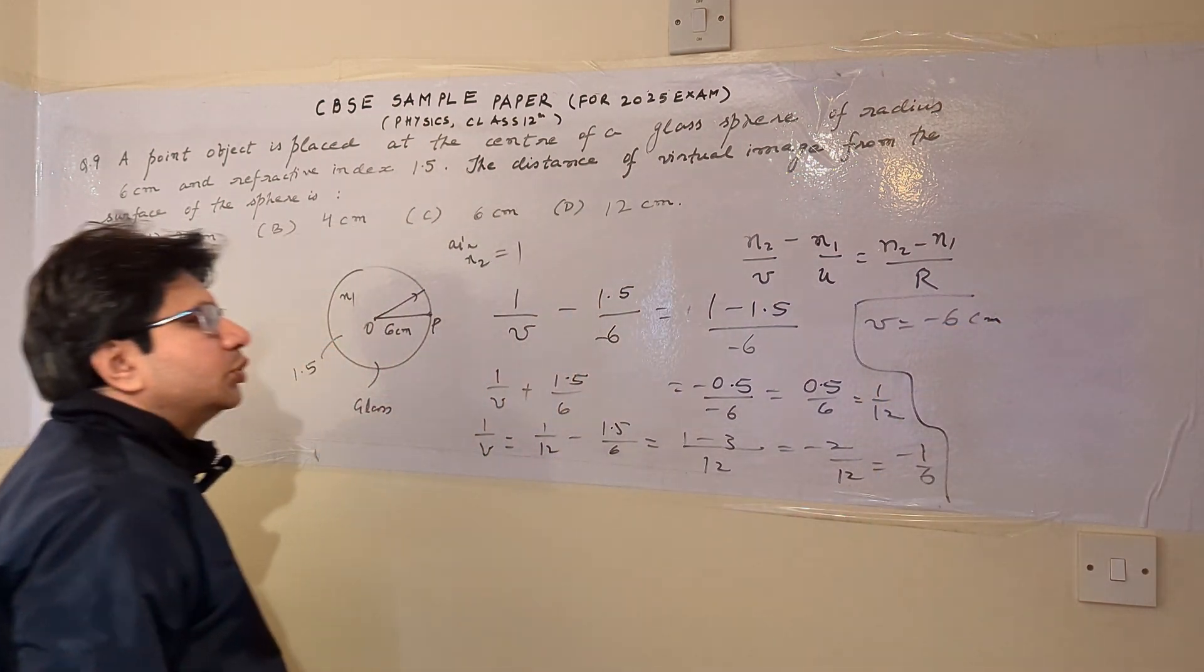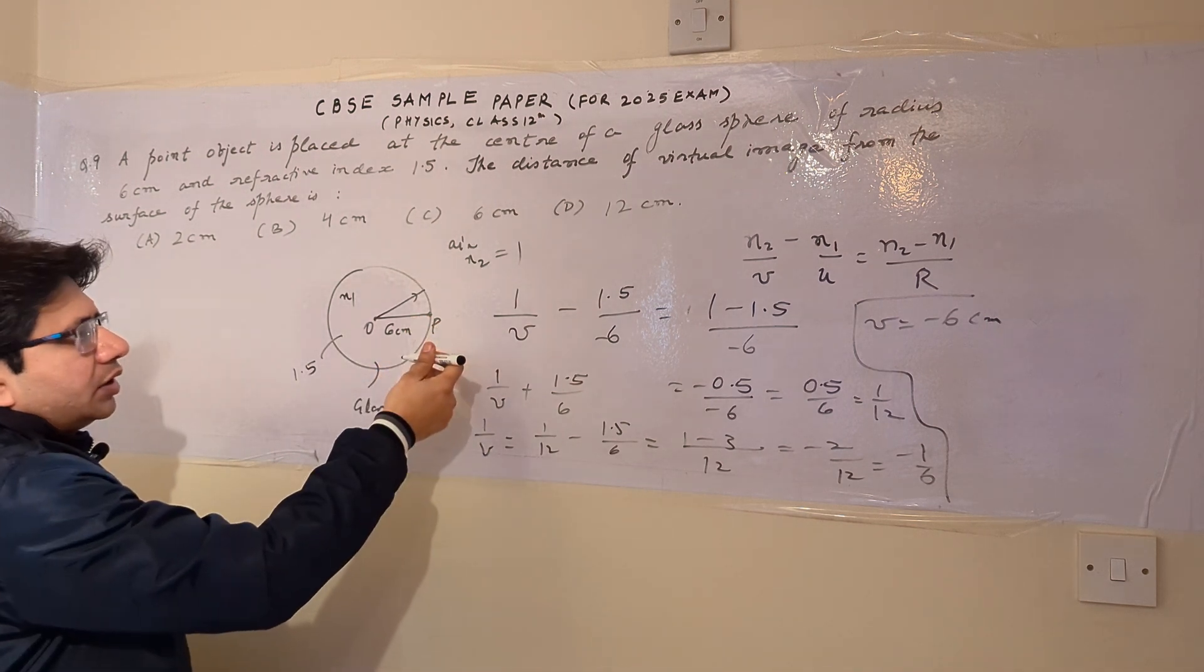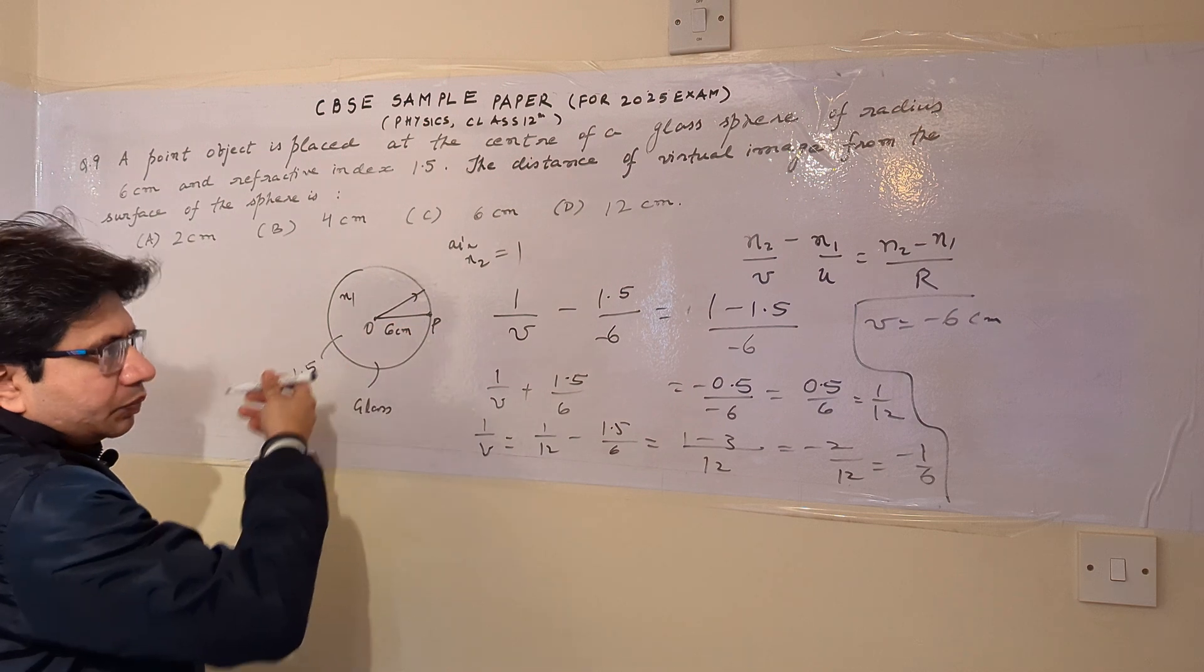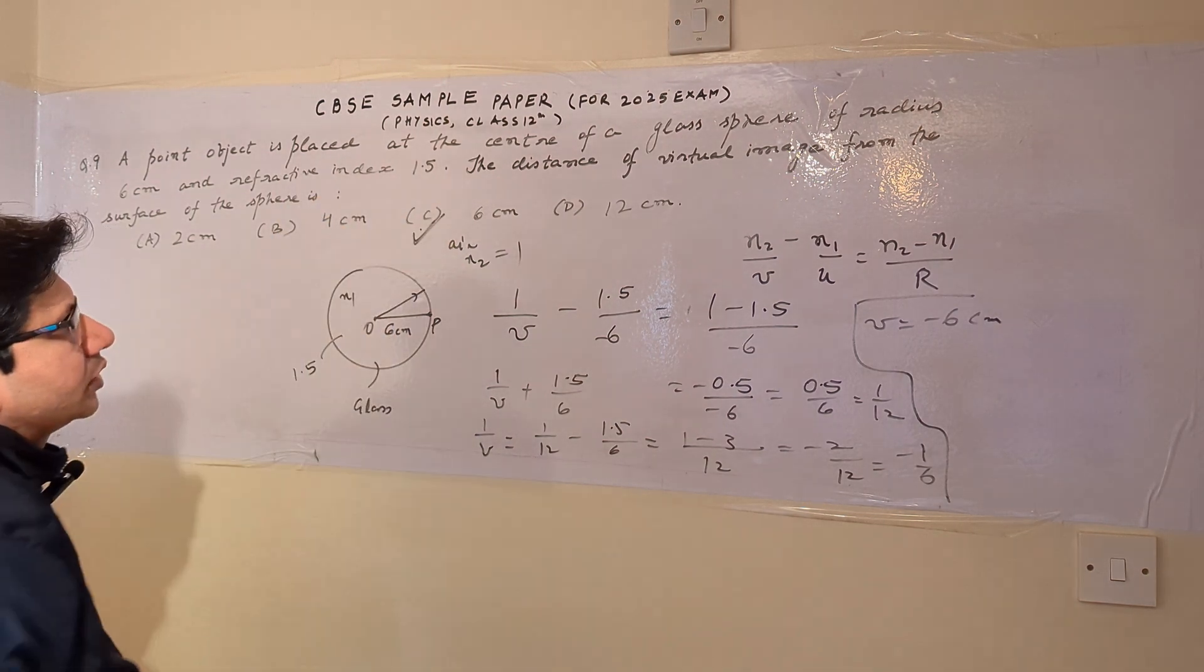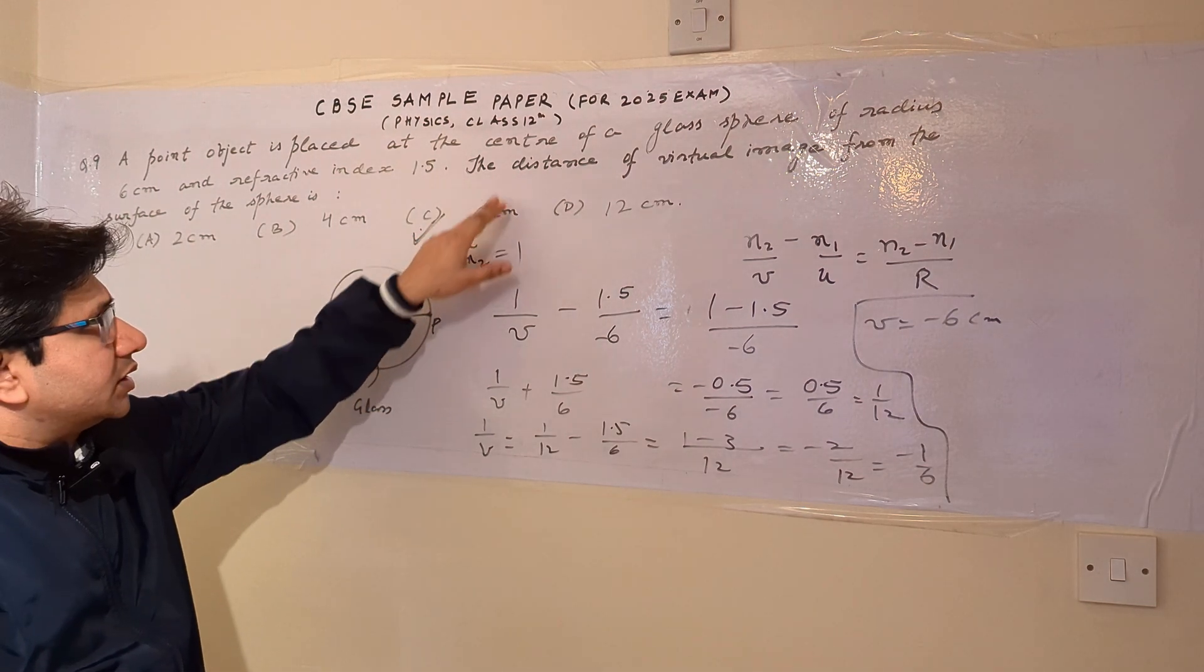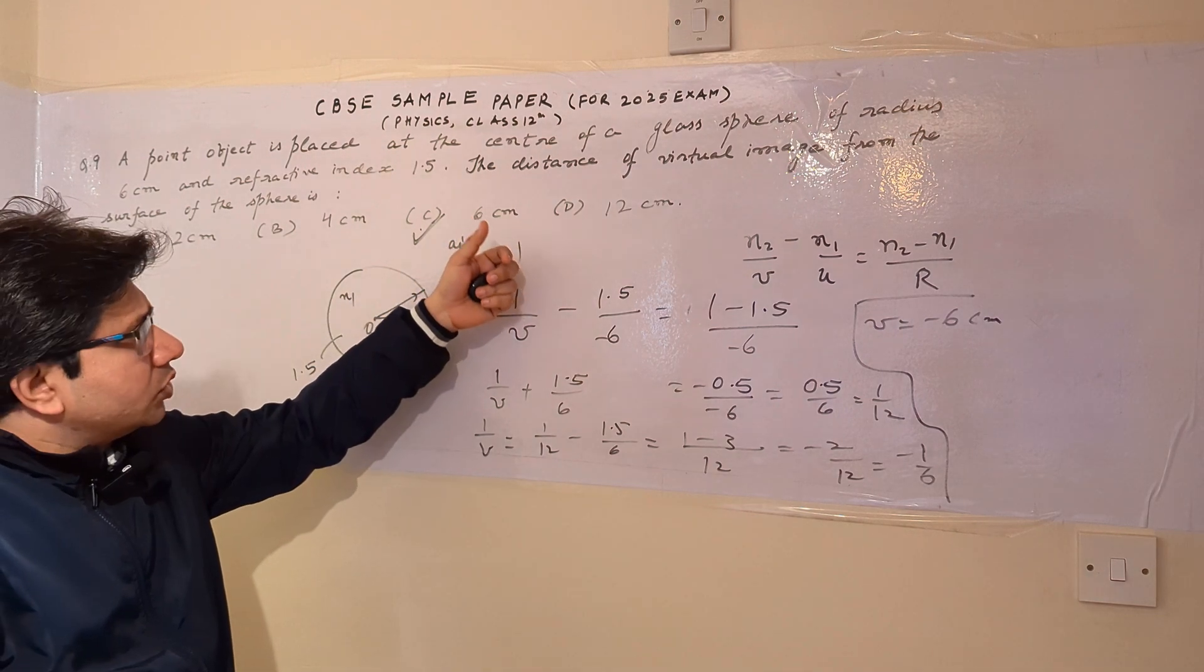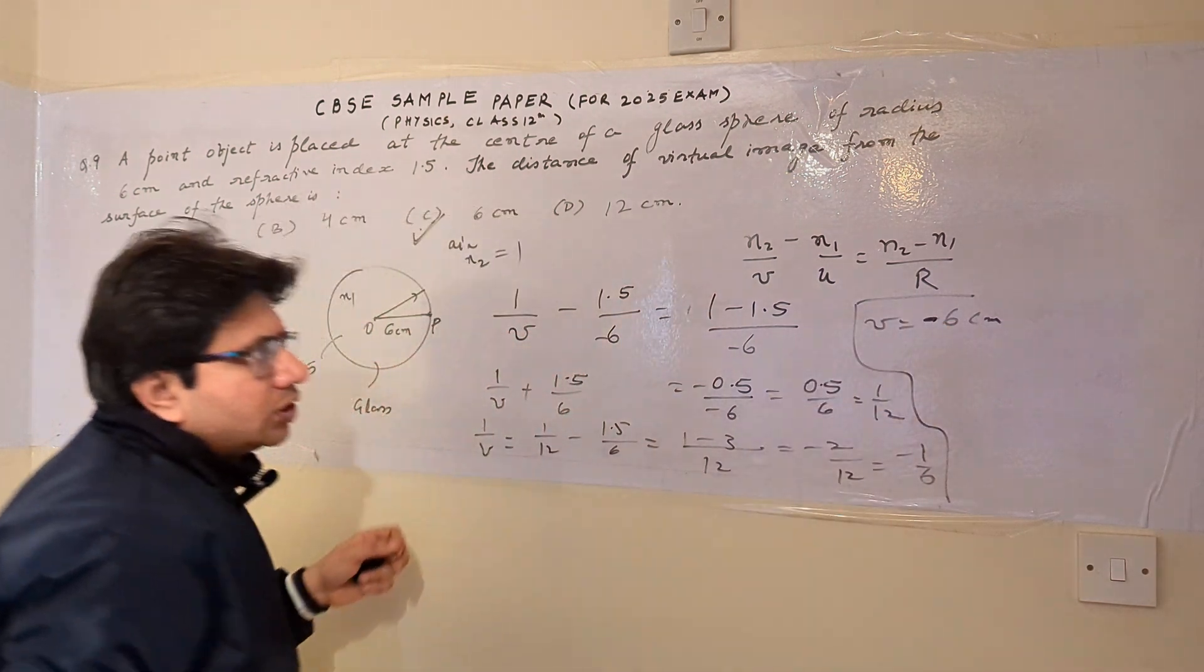So we can say that the position of the image is 6 centimeters from the pole. And the negative sign shows that this is on the left-hand side. So the 6 centimeter option is C. In this question, it is asked only about the distance. The distance is 6.